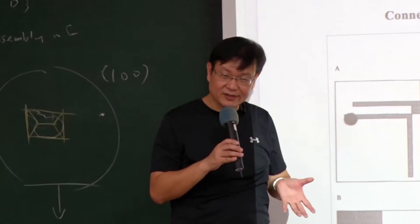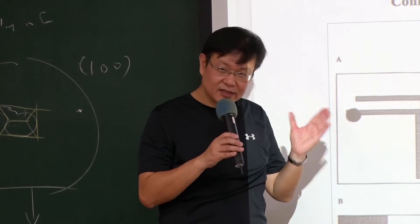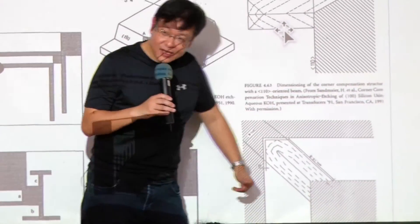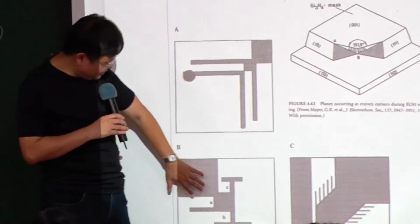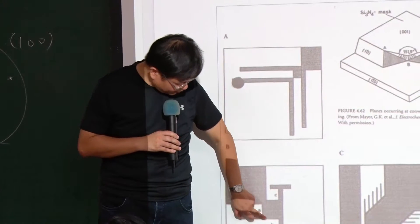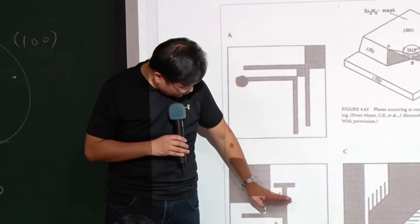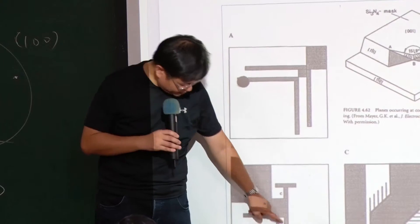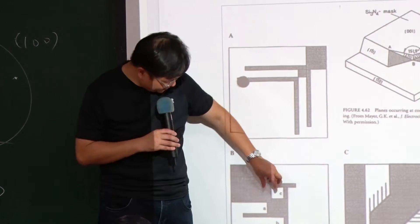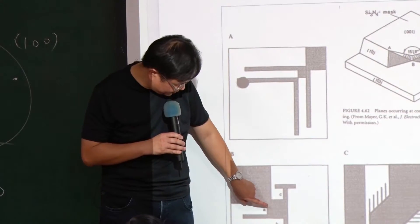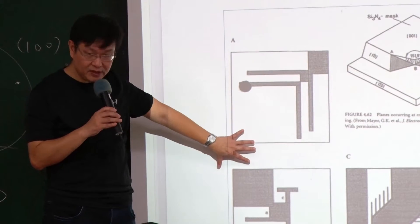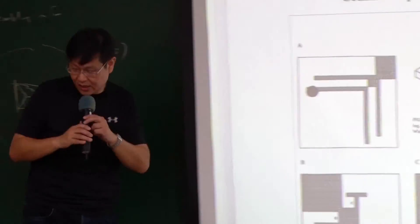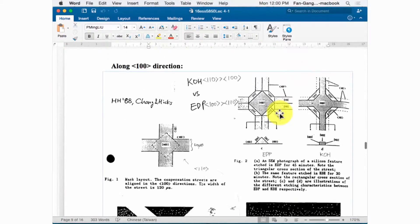For EDP, it's different. Remember, EDP, the second slowest surface is 110 surface. 110 surface is exactly the surface along this boundary. So for EDP, you need to design the corner compensation, the extension, along 110 surface. So become square like this and do extension again. So the most simple one, simplest one is to put the rectangular extension over here. This is for EDP. The second slowest is 110. So remember that.